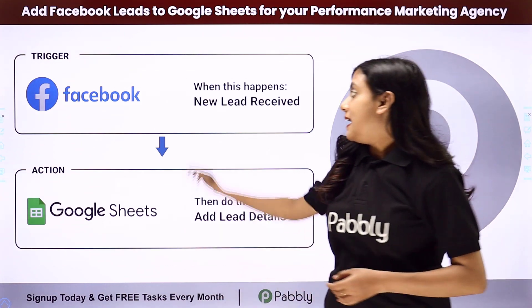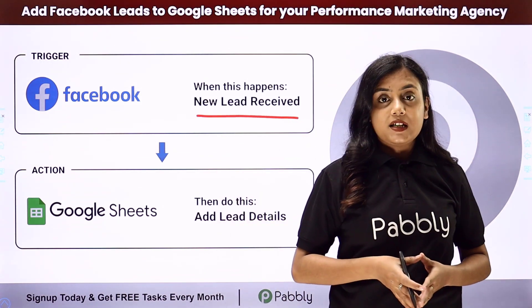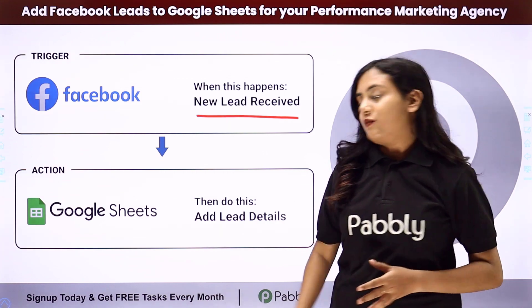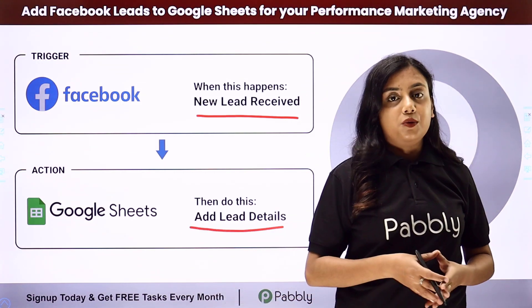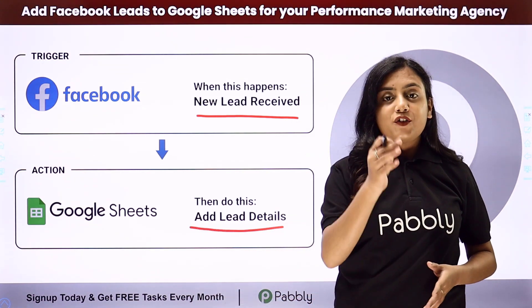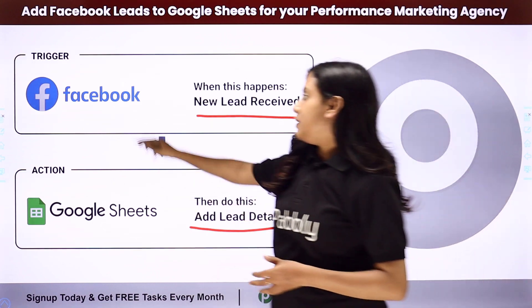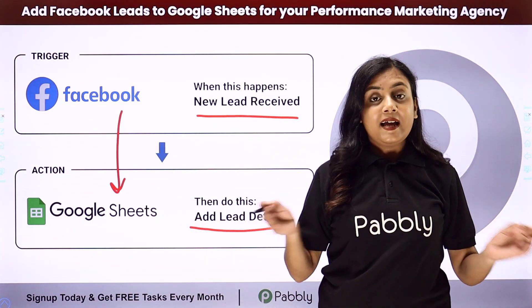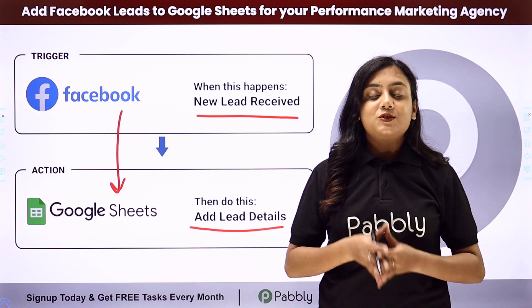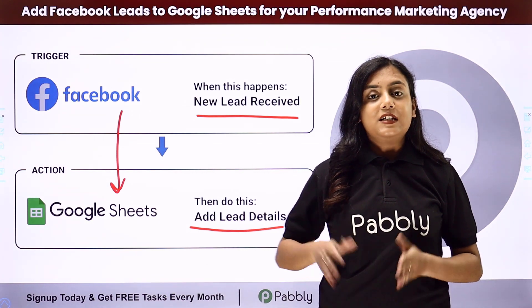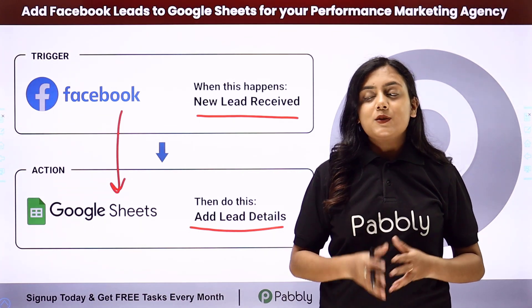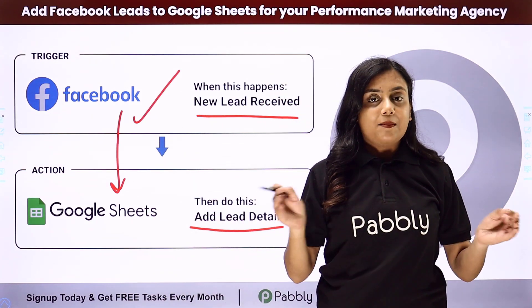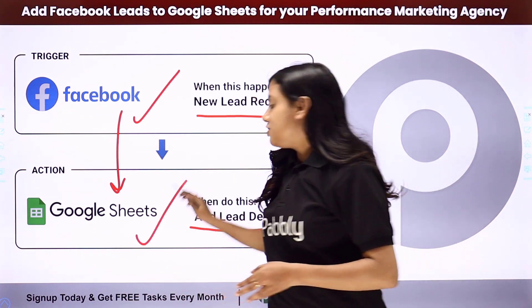What I want is that every time a new lead is generated in my Facebook lead ads, automatically all the details of that lead should be added into my Google Sheets. For that we need to create an automation between Facebook lead ads and Google Sheets with the help of Pabbly Connect. In this process my trigger application is going to be Facebook lead ads and my action application is going to be Google Sheets.